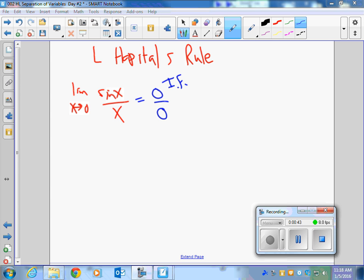Mark 1, right? Mark 2 would be set these up as a function over a function, F of X over G of X. Limit as X approaches 0. The derivative of sine, which is cosine, over the derivative of X, which is 1.